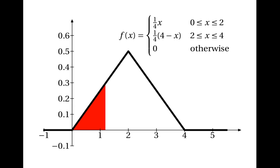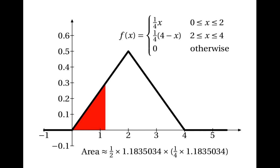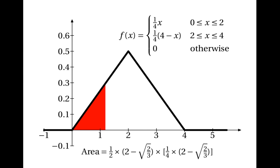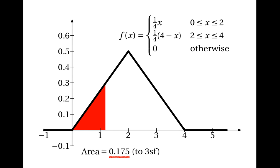We need to find the area of the triangle from 0 to 2 − √(2/3). Using area = (1/2) × base × height, the base is 2 − √(2/3) and the height is (1/4)(2 − √(2/3)), so the area is (1/8)(2 − √(2/3))². More accurately, this equals (1/8)(2 − √(2/3))² ≈ 0.175 to three significant figures.